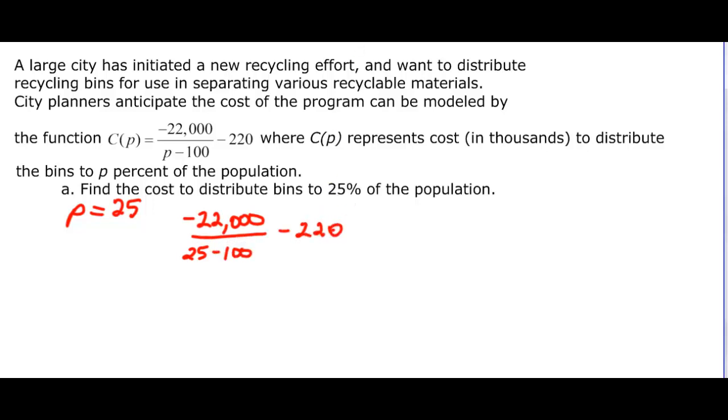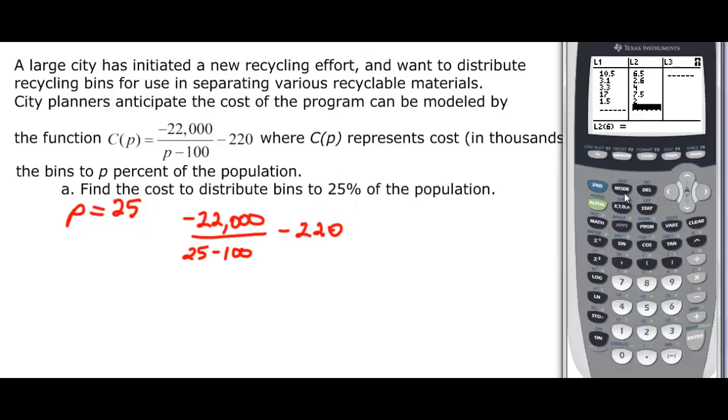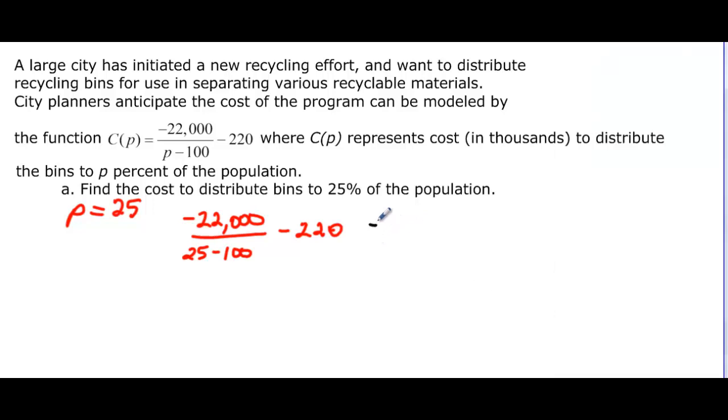So we have negative 22,000 over 25 minus 100, and then that fraction minus 220. And I'm just going to pull up my calculator and go to my home screen. And in here, I'm going to put negative 22,000 divided by, and then in parentheses, 25 minus 100 minus the 220. And we find out that the cost is going to be about 73,000 dollars.